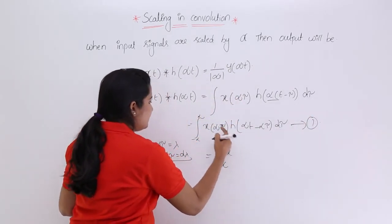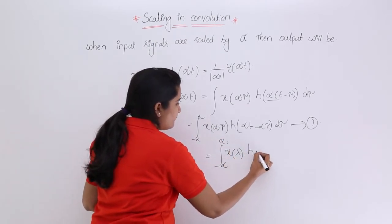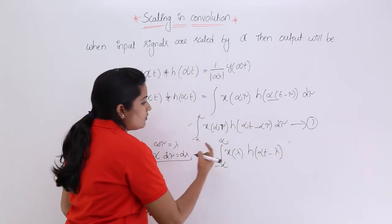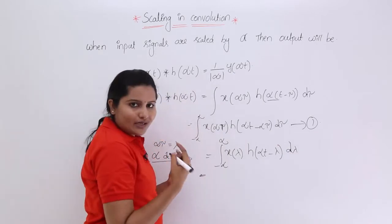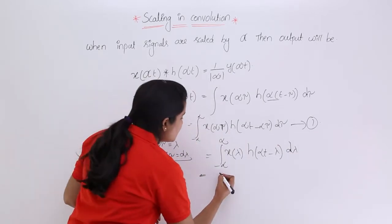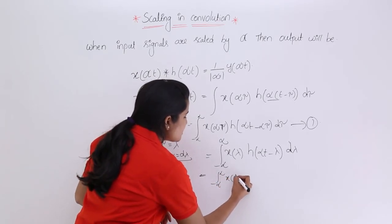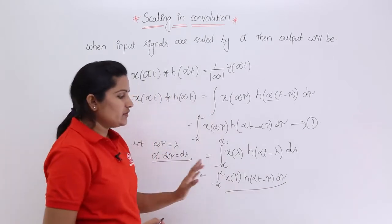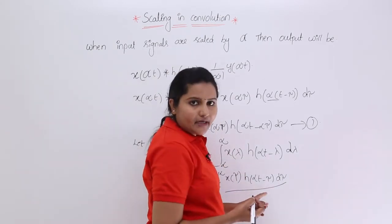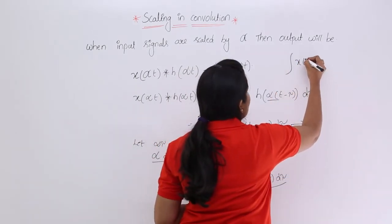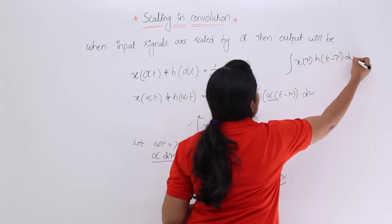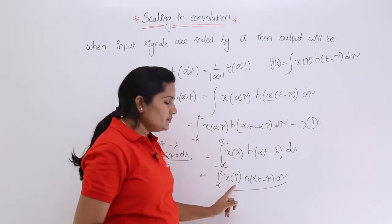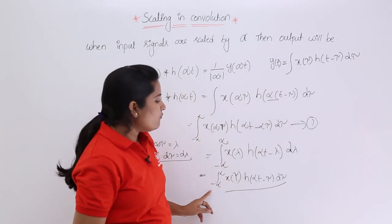Substituting into the integral: from minus infinity to infinity, in place of alpha·tau I substitute lambda, and h becomes h(alpha·t minus lambda). Replacing lambda back with tau to compare with the general convolution form, we get the integral of x(tau)·h(alpha·t minus tau) d·tau. Comparing this with the general convolution equation — the integral of x(tau)·h(t minus tau) d·tau which gives y(t) — this is equivalent to y(alpha·t).